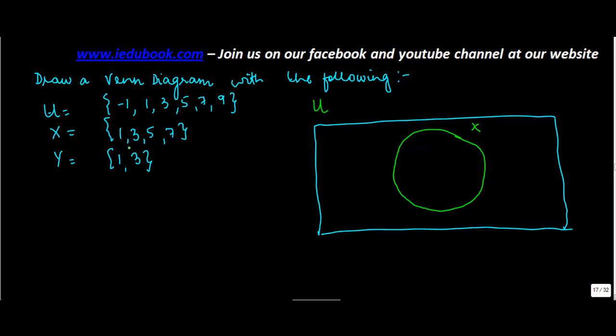Now what we also see here is that there is a subset Y. And whatever Y contains is also contained in X, and X also contains certain additional numbers. So effectively Y is a subset of X.